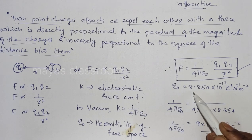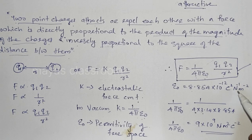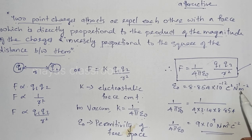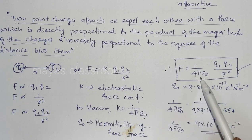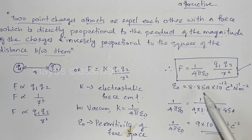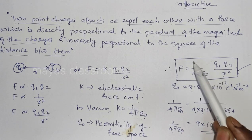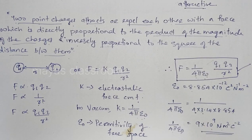The value of epsilon-zero is 8.854 × 10⁻¹² . Comparing the values of 1 by 4π·epsilon-zero, you can see the value is 9 × 10⁹ N·m² per C².